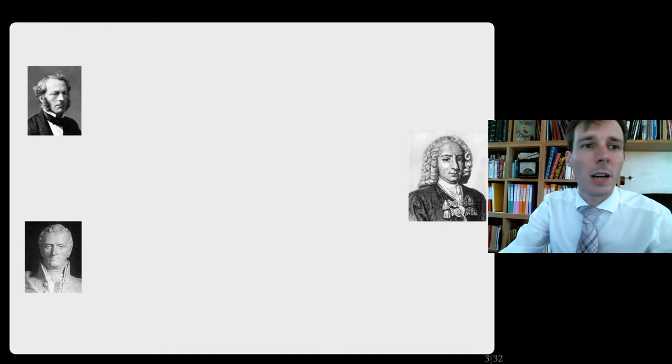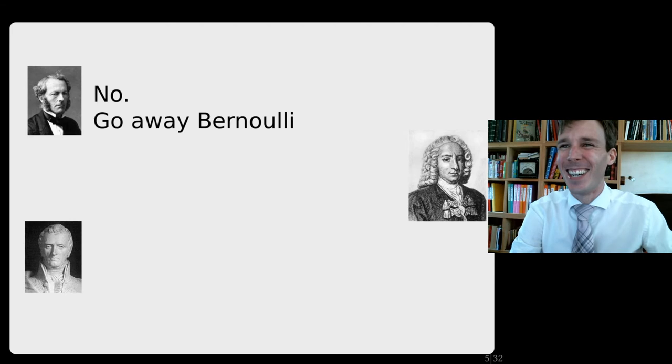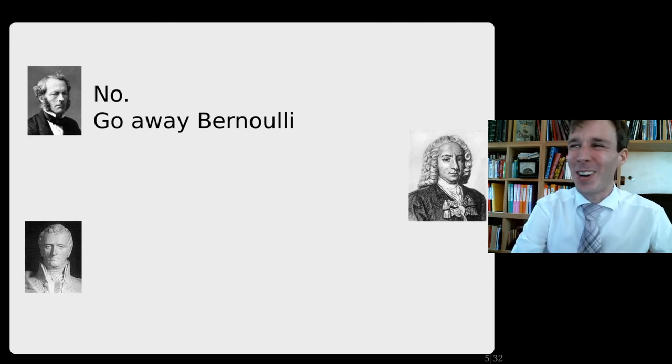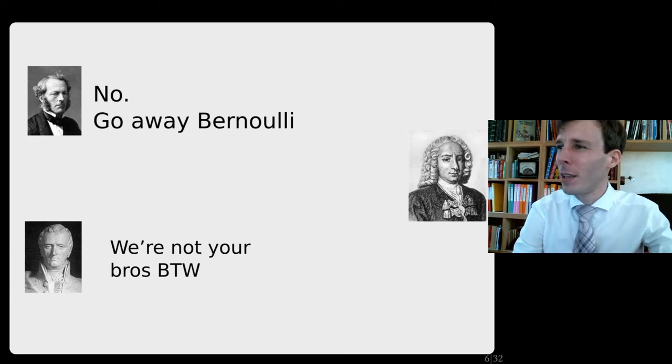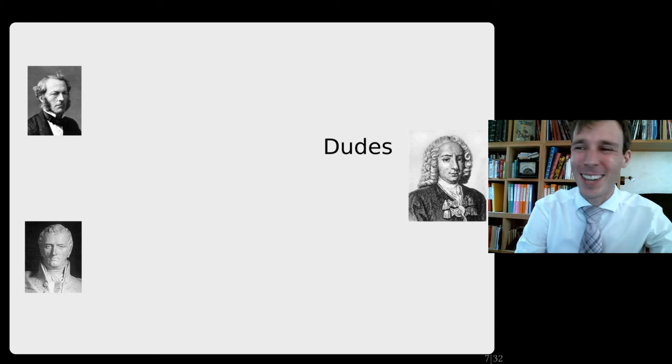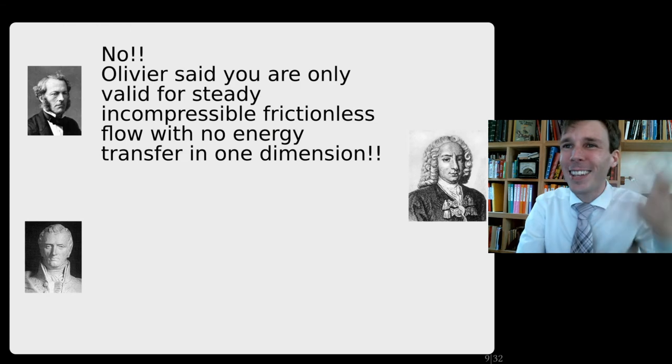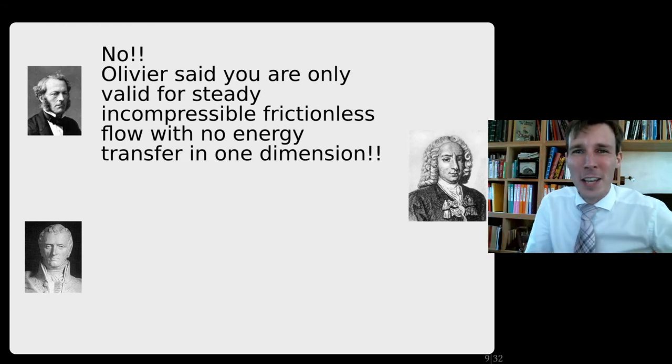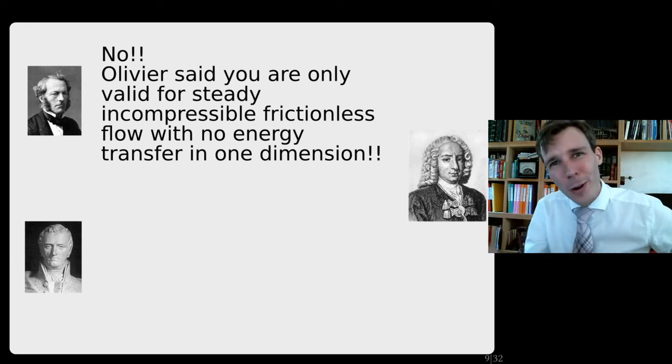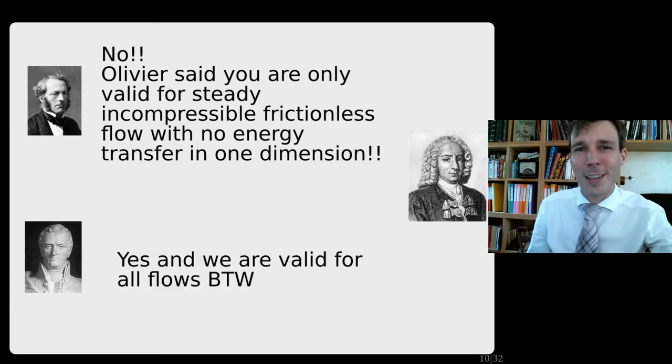So Bernoulli comes up and says, 'Hey bros, I hear you want to calculate pressure.' And then Stokes says, 'No, go away Bernoulli.' And then Navier says, 'And we're not your bros, by the way.' Bernoulli says, 'Dudes, pressure is like easy to quantify.' And of course Stokes gets angry and says, 'No, you are only valid for steady, incompressible, frictionless flow with no energy transfer and only one dimension.' And Navier adds, 'Yes, and we are valid for all flows, by the way.'